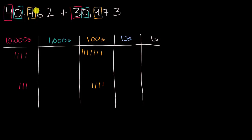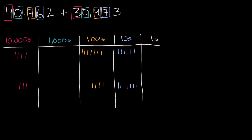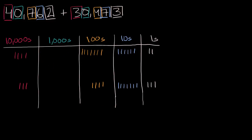Then I go to the tens place. Here I have six tens, and here I have seven tens. And then last but not least, here I have two ones, and here I have three ones.